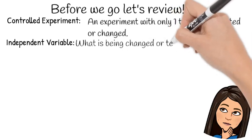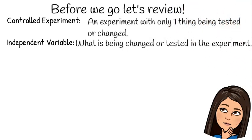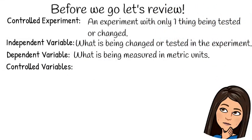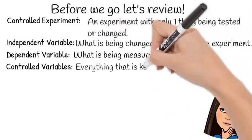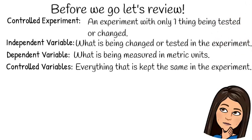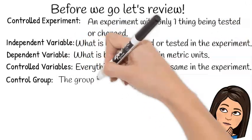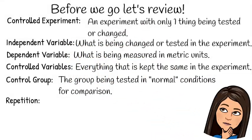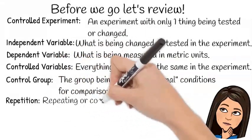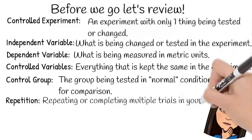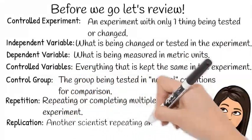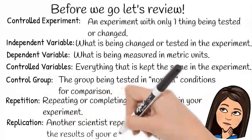Independent variables are what is being changed or tested in the experiment. A dependent variable is what is being measured in metric units. Controlled variables are everything that is kept the same in the experiment. Controlled groups are the groups that are being tested in normal conditions for comparison. Repetition is repeating or completing multiple trials in your experiment. Replication is another scientist repeating and confirming the results of your experiment.